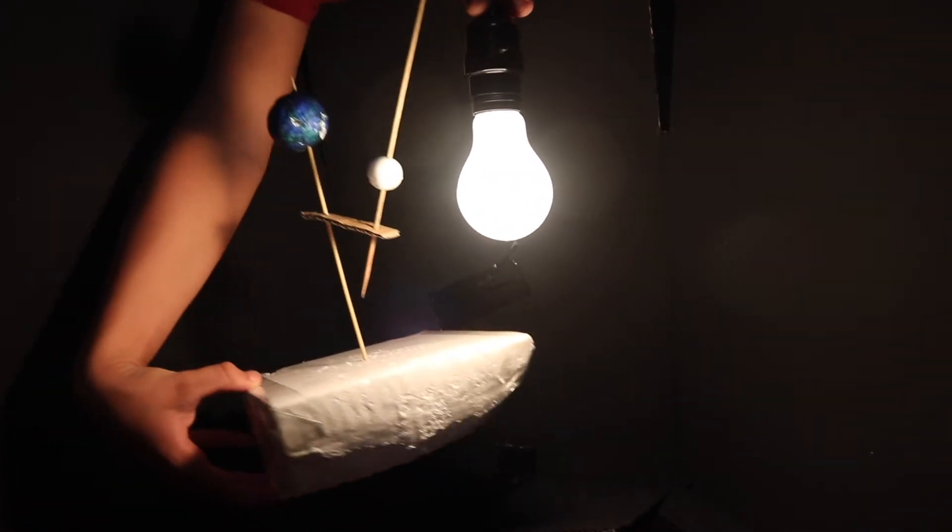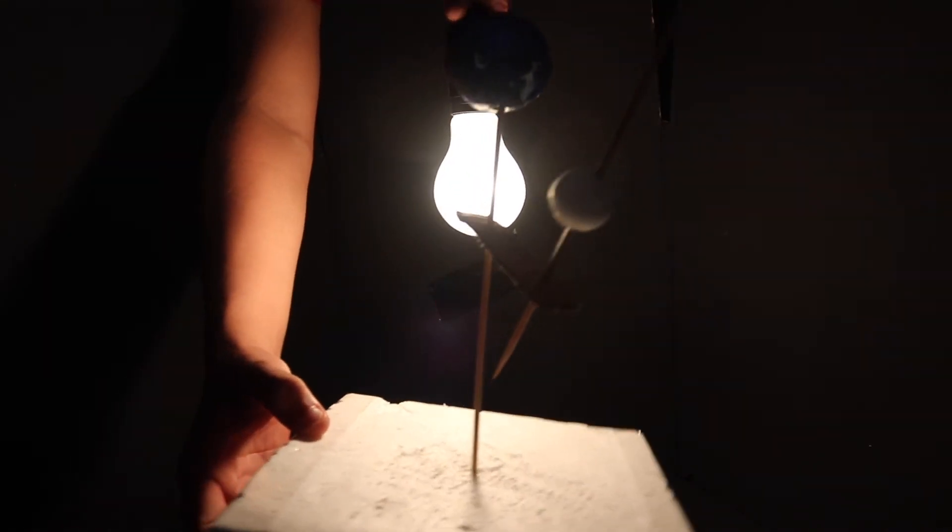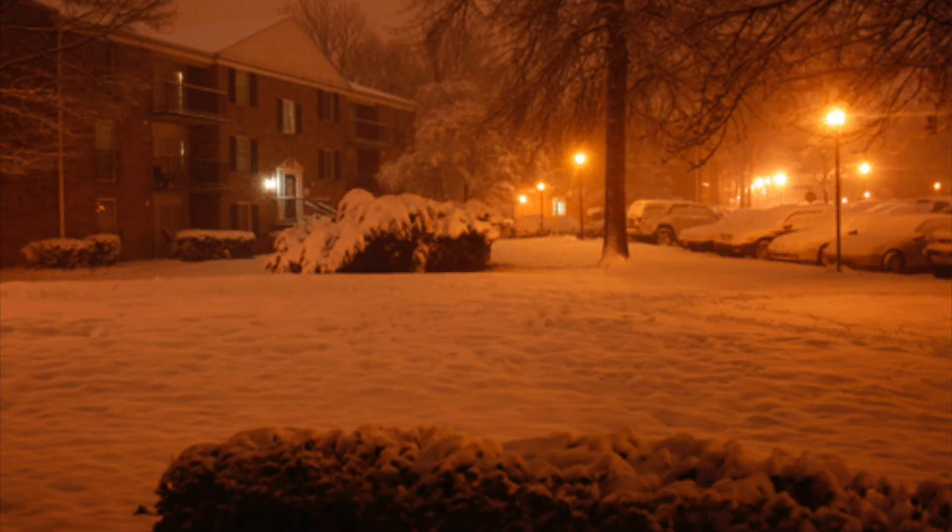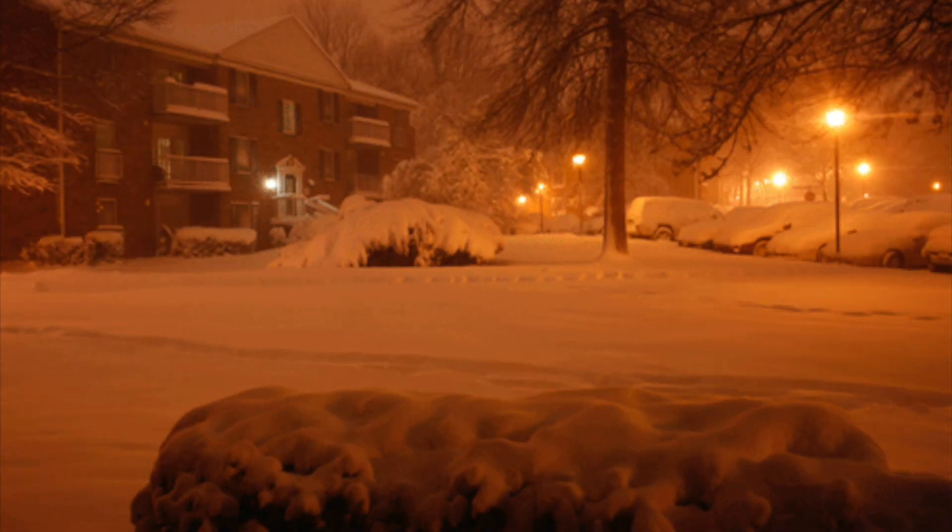Winter occurs when a certain hemisphere is tilting away from the Sun, causing the Sun's rays to hit less directly. Winter has lower temperatures, shorter days, and longer nights, because the portion of the hemisphere in darkness is larger than usual.